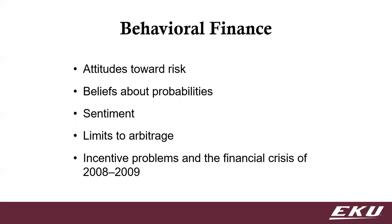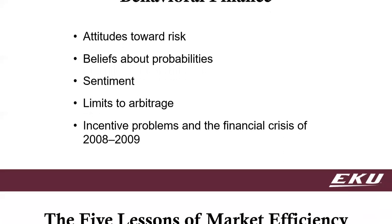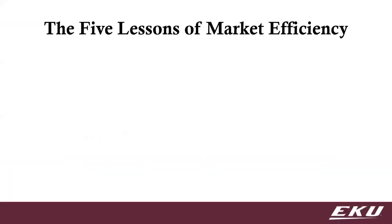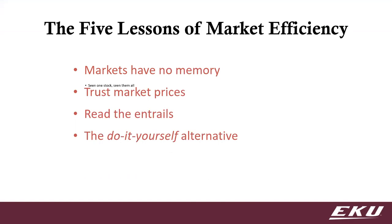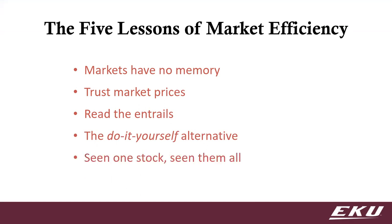When we talk about market efficiency, the key things to take away: one is that markets have no memory — you don't count on what happened today and say that's going to happen tomorrow. Another is that we should probably trust market prices. That sounds strange, but you're saying you have a better price than everyone collectively in the market at that moment.